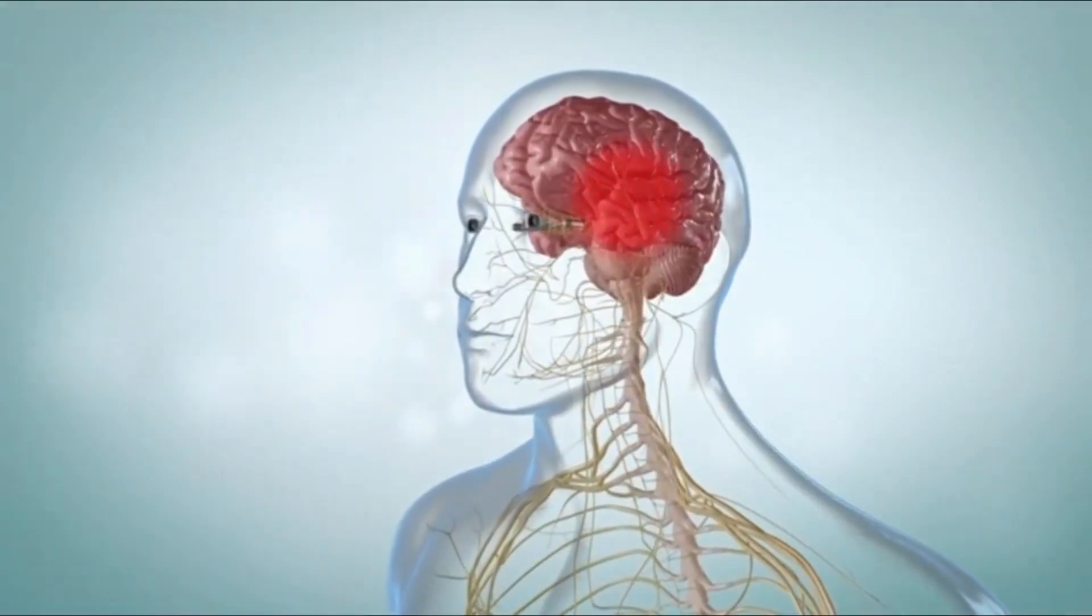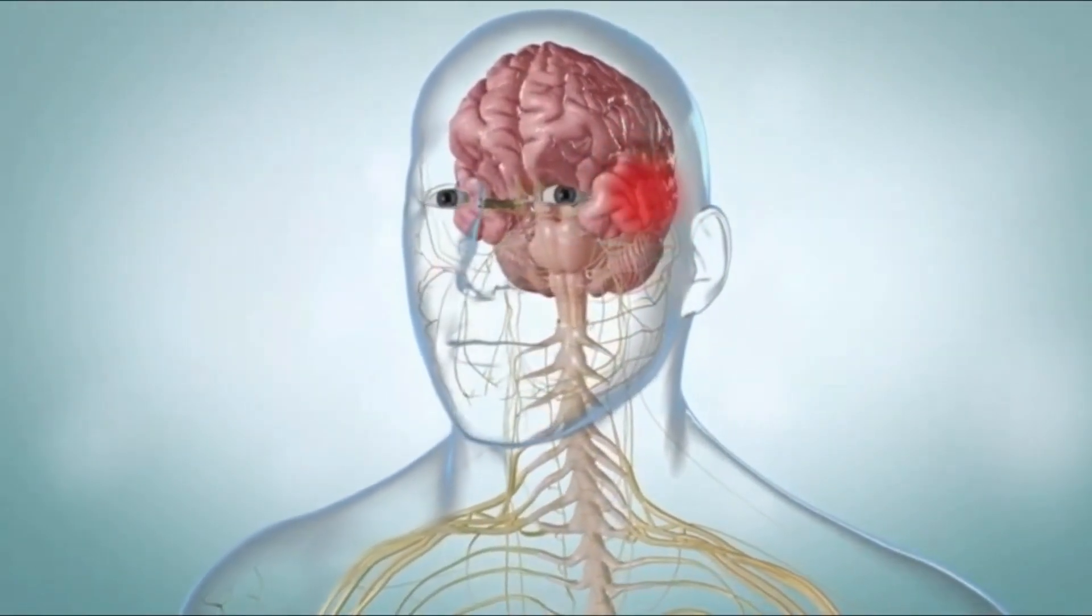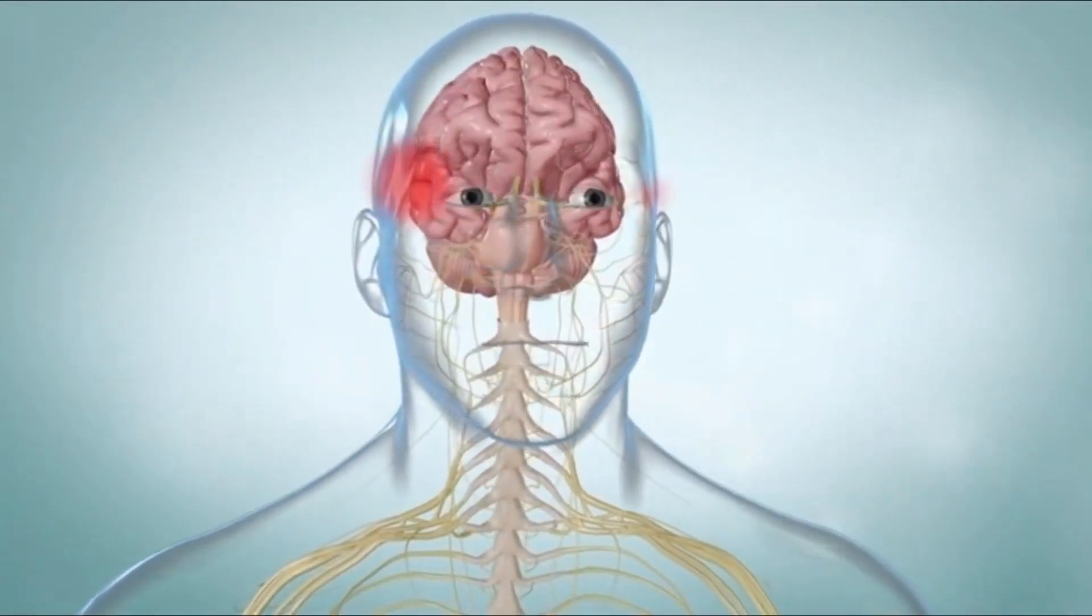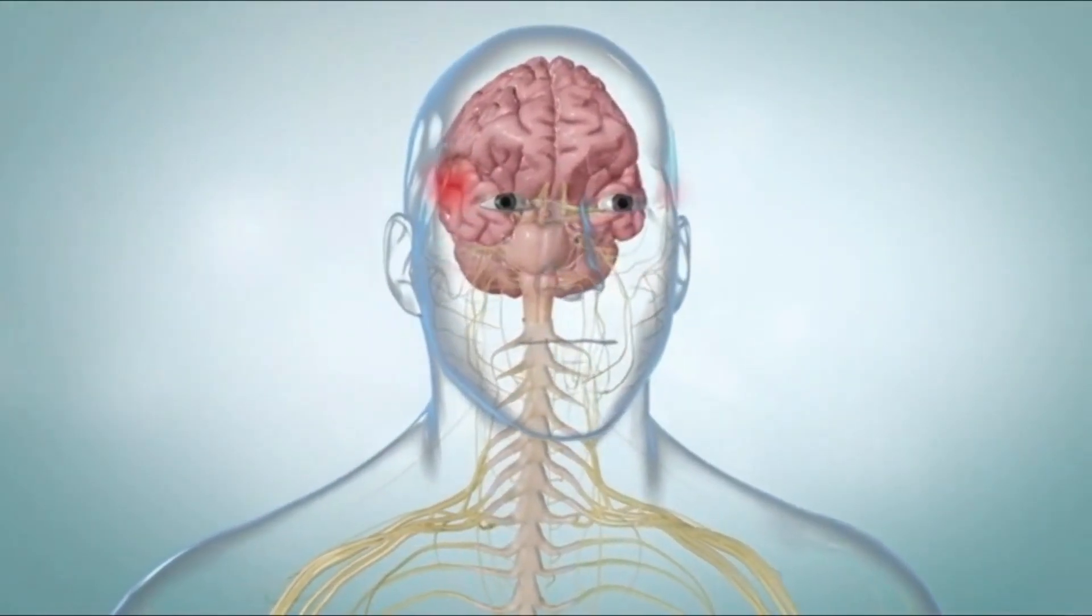The pain of cluster headaches can be very strong. It almost always occurs on one side of the head and stays on that side during the period of attacks. When another period starts, the headaches can occur on the opposite side.